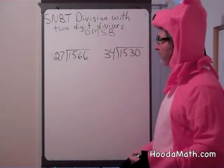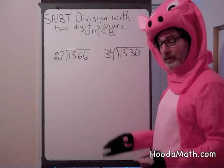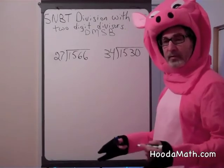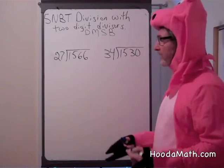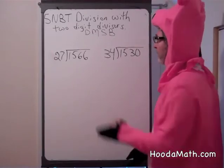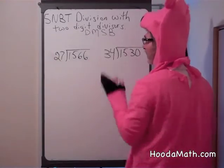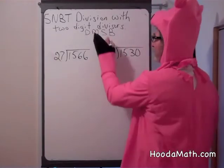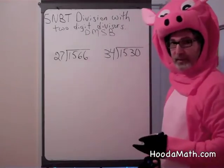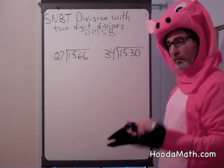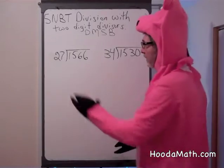Before we start dividing, we need to know an easy rule to help us — an easy algorithm. We divide, then we multiply, then we subtract, and then we bring down. But before we do that, it's helpful if we estimate.